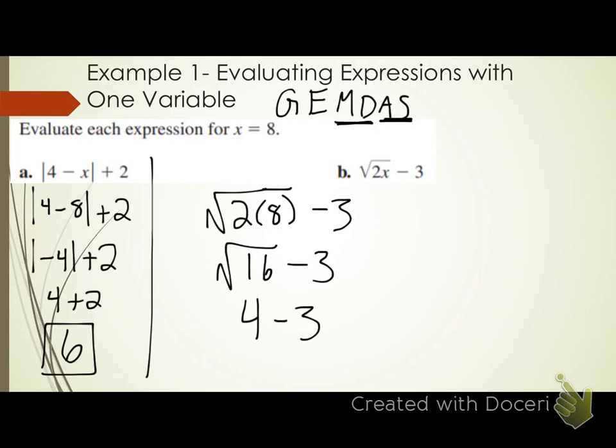Once I simplify that, everything else in the expression just comes down — the minus 3 just comes down. No exponents, no multiplication or division. We do have subtraction: what's 4 minus 3? One. So the value of my expression when x equals 8 is 1.